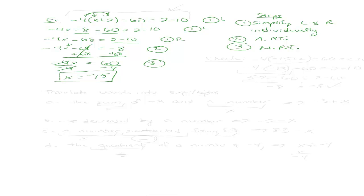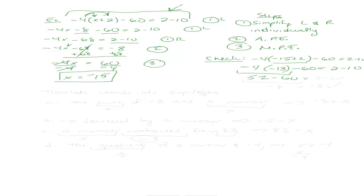Let me verify that answer by plugging negative 15 back into the original equation: negative 4 times the quantity negative 15 plus 2, minus 60, equals 2 minus 10. Following the order of operations, I do negative 15 plus 2 first, which is negative 13. Then negative 4 times negative 13 is positive 52, minus 60 equals 2 minus 10. So 52 minus 60 gives negative 8, and 2 minus 10 also gives negative 8. Both sides are equal, so I did the problem correctly.